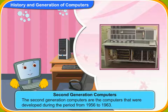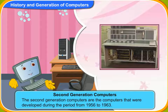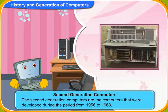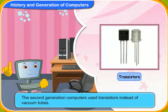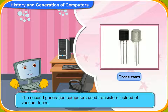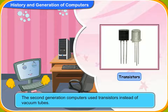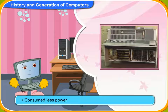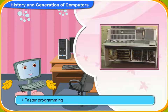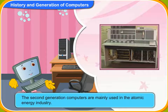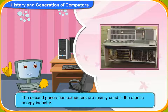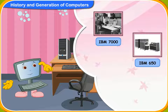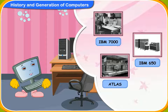Let us now learn about the second generation computers. These are the computers that were developed during the period from 1956 to 1963. The second generation computers used transistors instead of vacuum tubes. As transistors are smaller than vacuum tubes, the computers became much smaller in size. They also became faster and cheaper. They consume lesser power than the first generation computers. Programming can be done on these computers. These computers were mainly used in the atomic energy industry. IBM 7000, IBM 650 and ATLAS are some of the second generation computers.